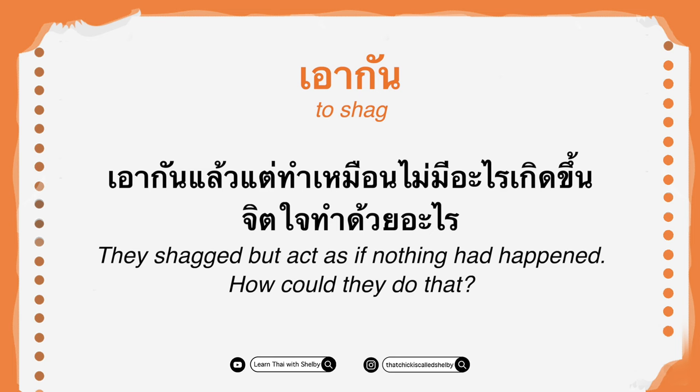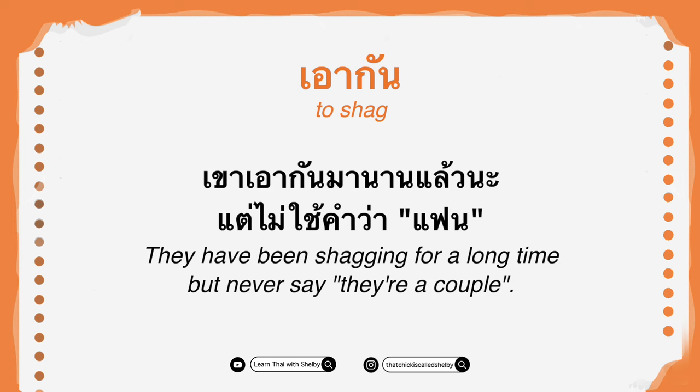The next phrase is เอากัน. You're probably wondering why I didn't translate it into a better term — because that's what it means. เอากัน means to have sex. Example: เอากันแล้วแต่ทำเหมือนไม่มีอะไรเกิดขึ้น จิตใจทำด้วยอะไร — they did it but acted as if nothing had happened; how could they do that? And: เขาเอากันมานานแล้วนะ แต่ไม่ใช่คำว่าแฟน — they have been doing it for a long time but never say they are a couple.